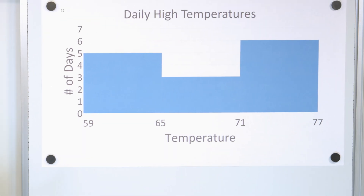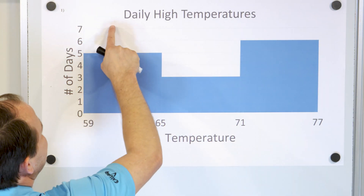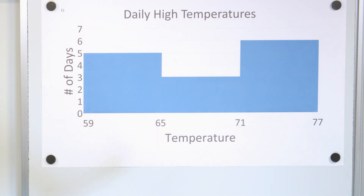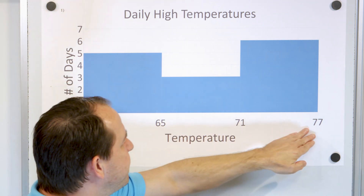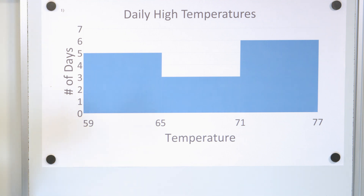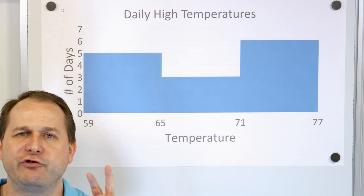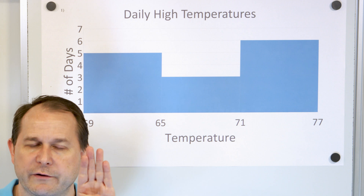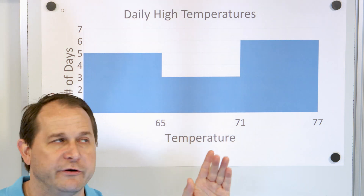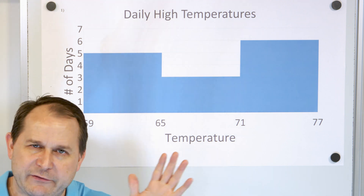What are the differences? This is a histogram of the daily high temperatures in a region. On this axis it's the number of days, and on this axis it's the temperature ranges. When you compare a bar chart with a histogram, there are two main things that are different. In a bar chart, usually the bars have spaces between the bars. You'll notice there's really no space between these bars — histograms, everything's crammed together.